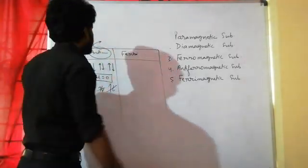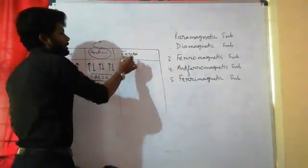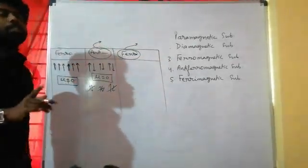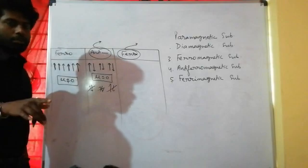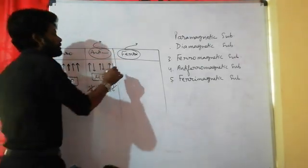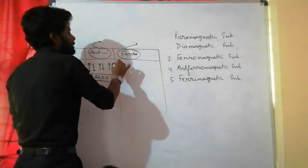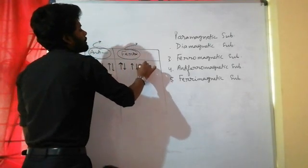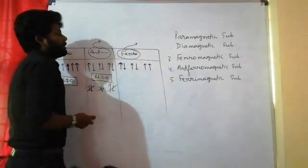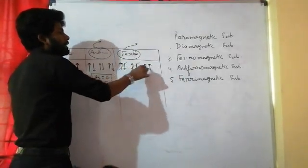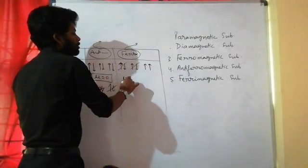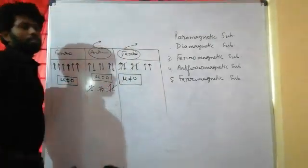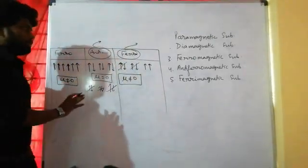In ferrimagnetic substances, when placed in a magnetic field, the domains are oriented in opposite directions but in unequal numbers. So they do not fully cancel, and the net magnetic moment — mu — is not equal to zero.